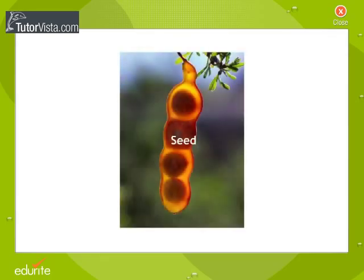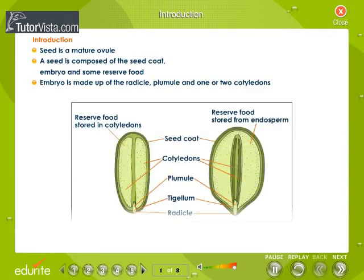The Seed. A seed is a mature ovule. A seed is composed of the seed coat, embryo, and some reserve food. The embryo is made up of the radicle, plumule, and one or two cotyledons.